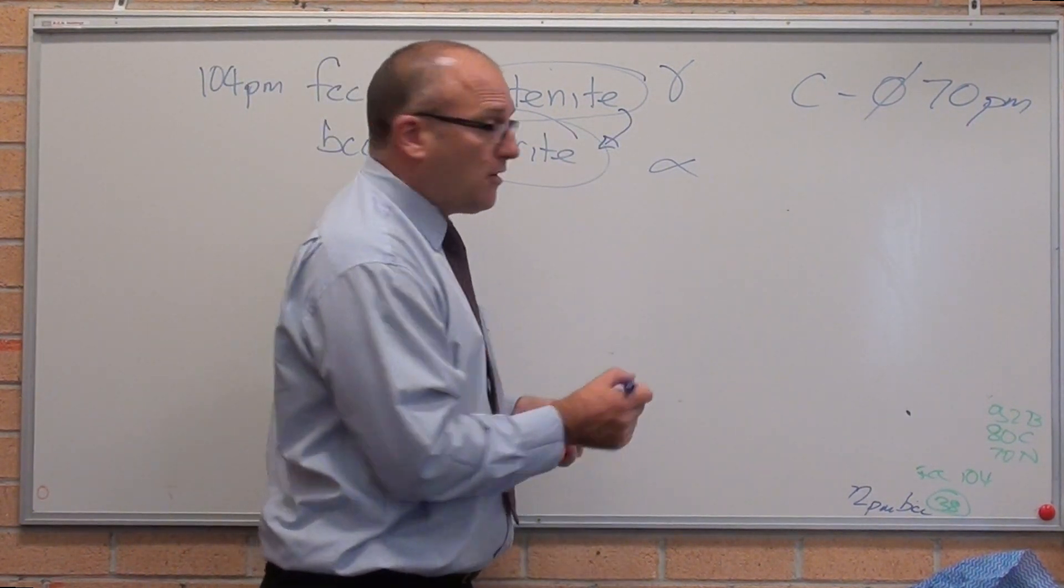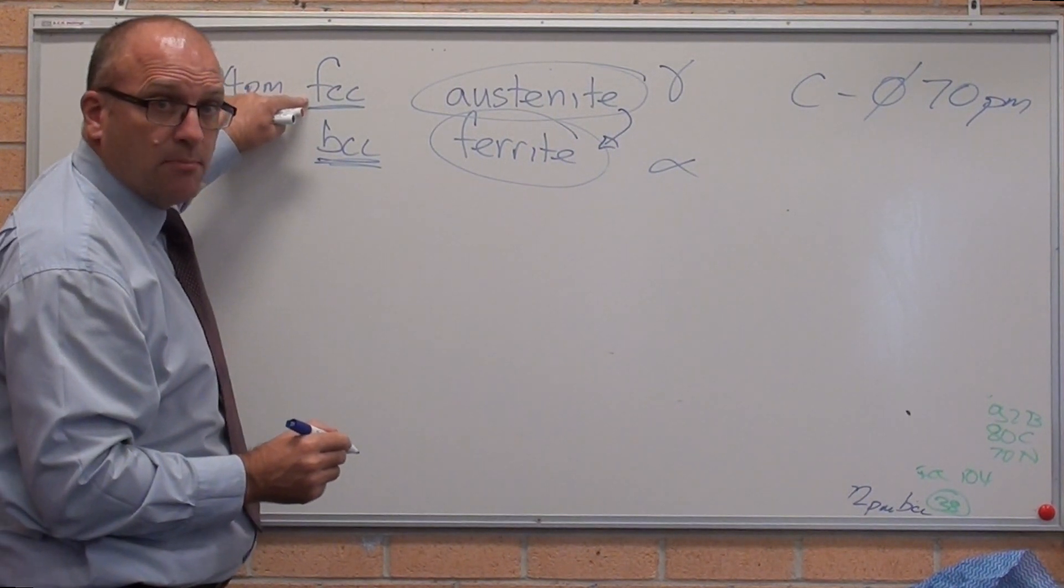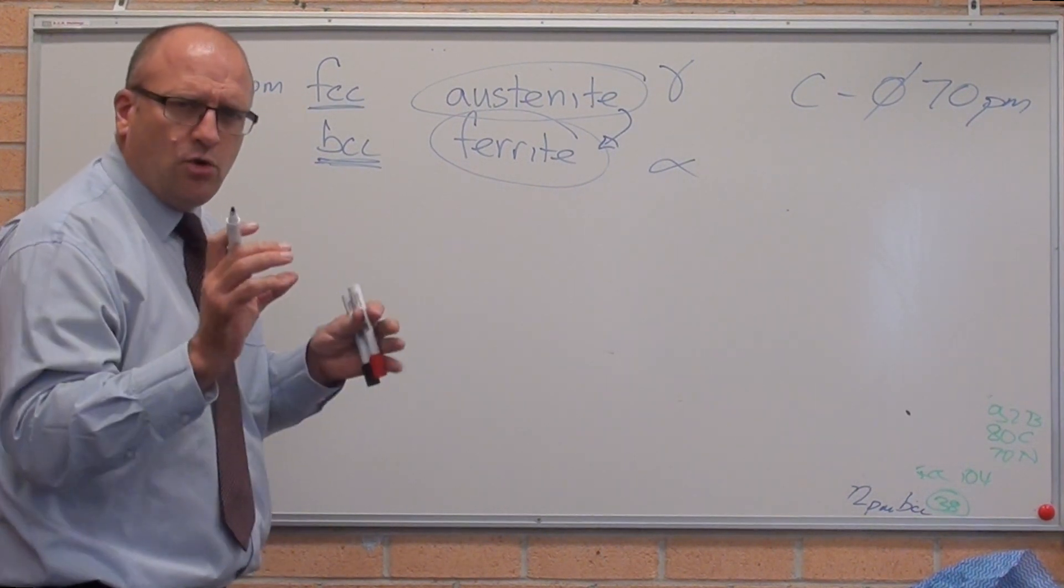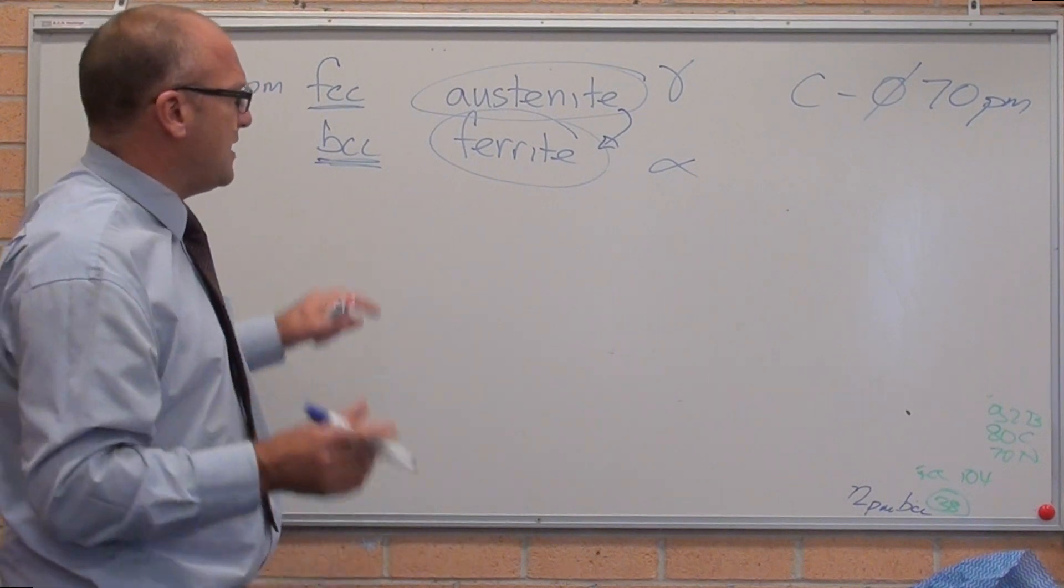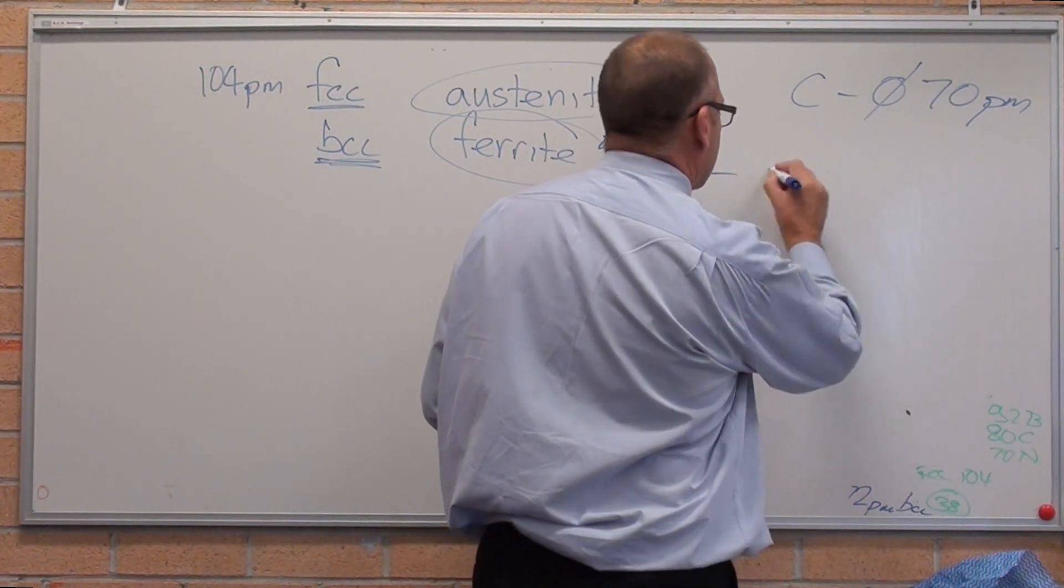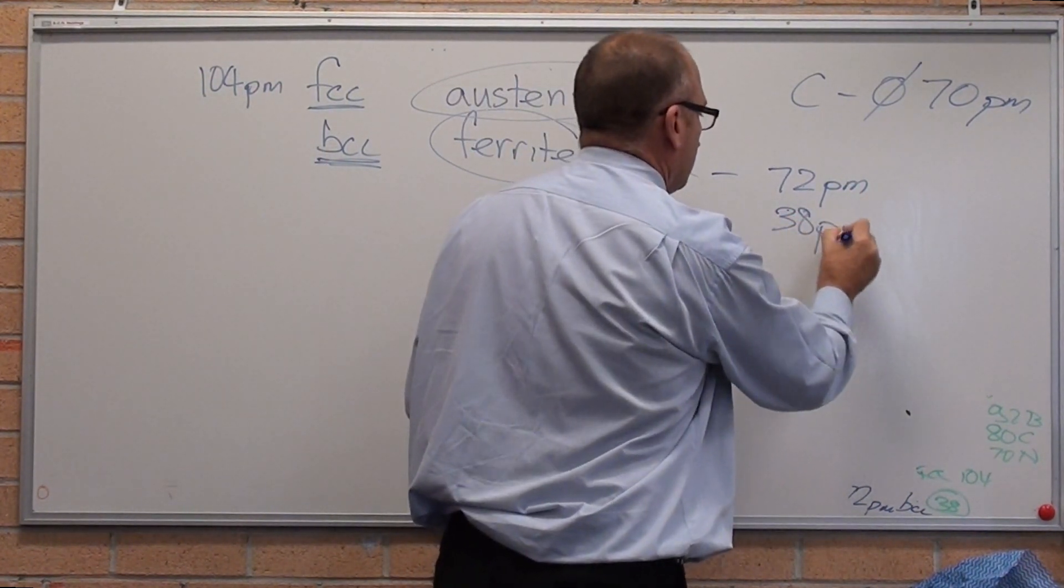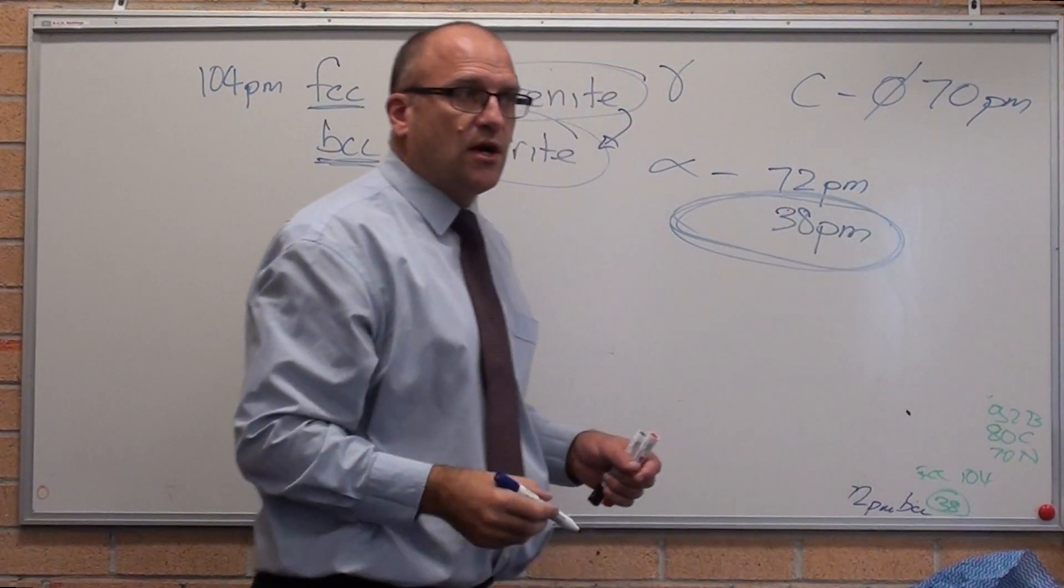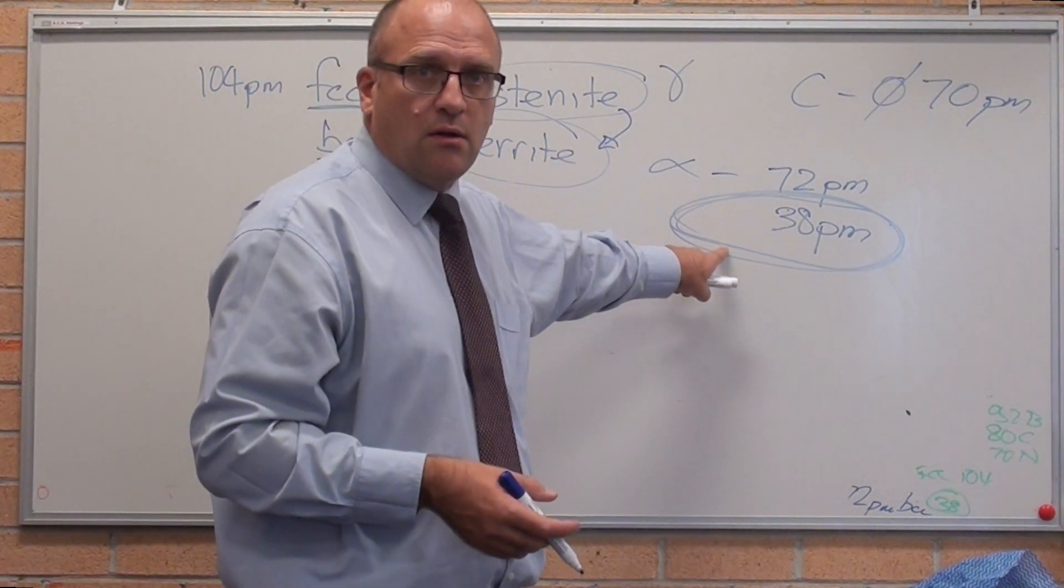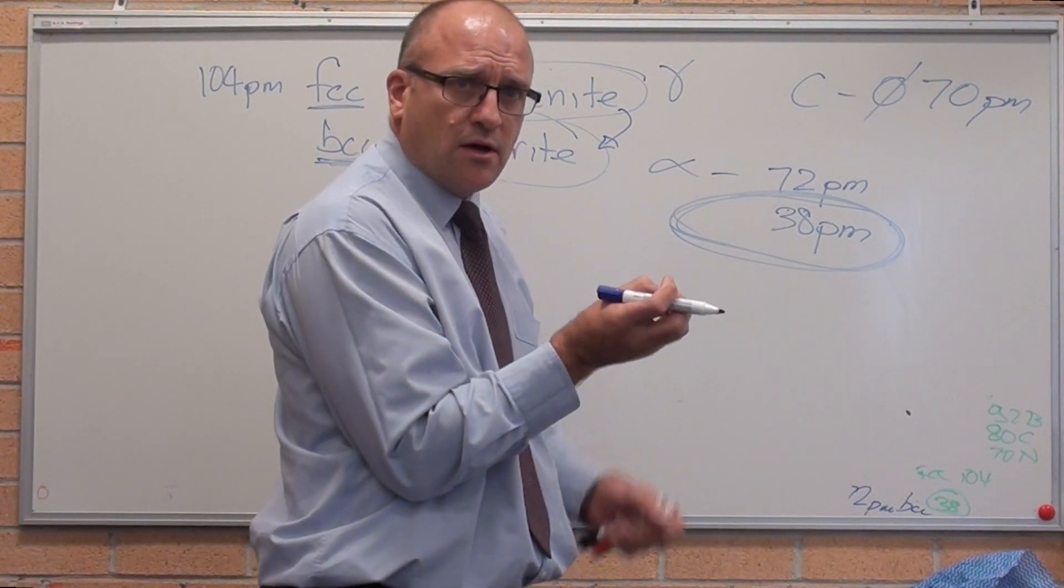Ferrite, as you know, ferrite is body-centered cubic. Face-centered cubic is close-packed. It's as close as it can possibly be, the atoms to each other. Body-centered cubic, the atoms are a little bit apart. You'd think there's more space but actually the average diameter of the hole - there are two different sized holes. One of them is 72 picometres round, the other one is 38. And believe it or not, the carbon crams itself inside that. Because of that, carbon does not dissolve in ferrite very well. Because it's physically, for strain purposes and atomic mismatch purposes, it crams itself in really tight corners in the lattice.